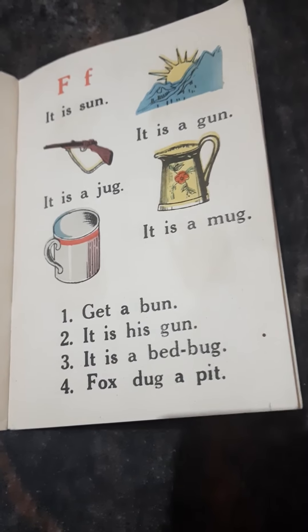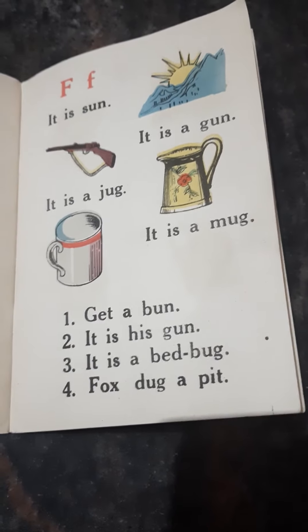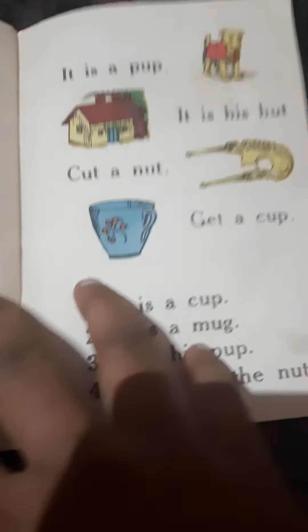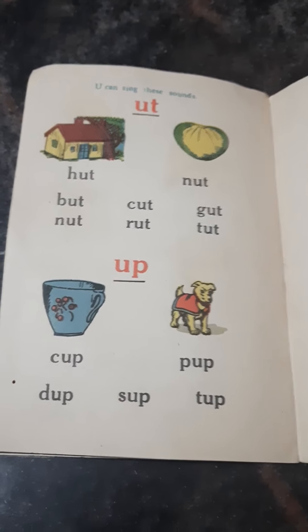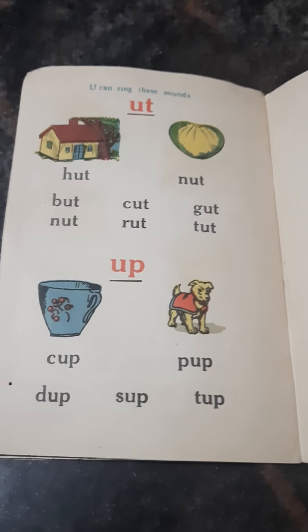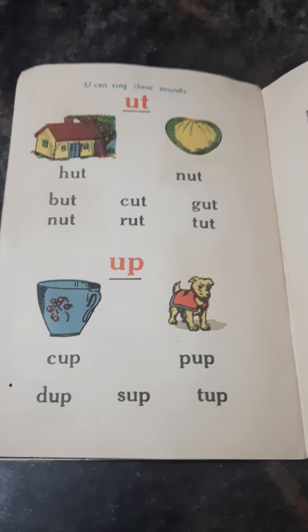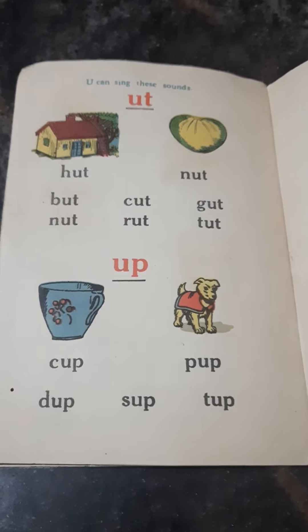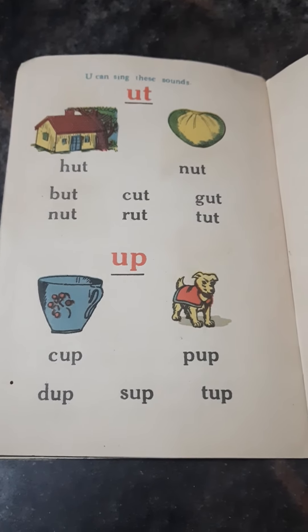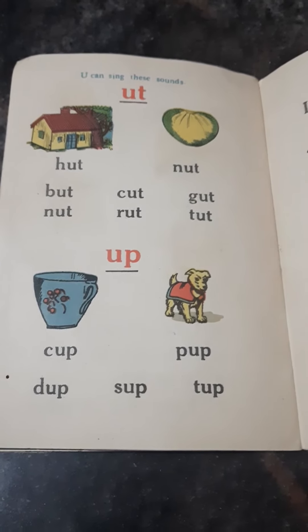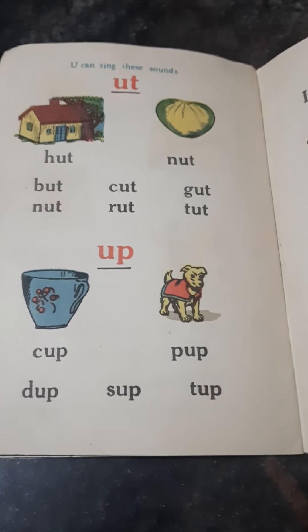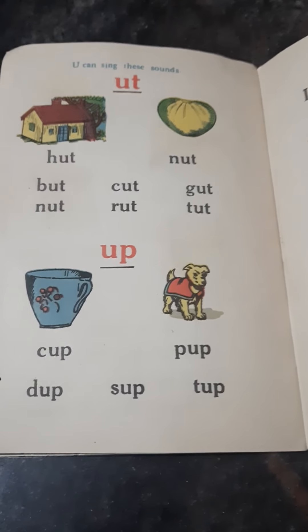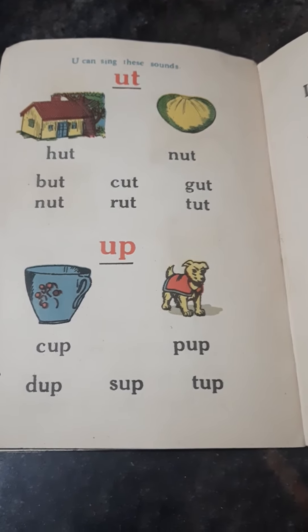The words ending with -un: sun, gun, bun, fun, run. The words ending with -ug: jug, mug, bug, dug, hug, fog, rug, and tug.